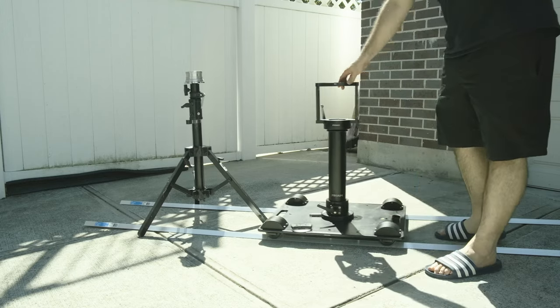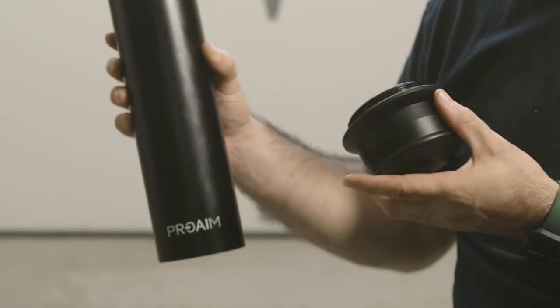Whether you're on a dolly, a tripod, or even a light stand, the Flexino is an amazing way to help you dial in your height.